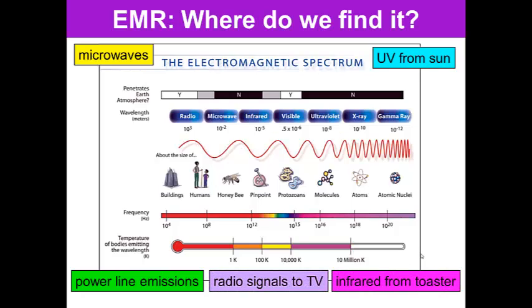Here are some things that we use electromagnetic radiations for. Microwaves use it to heat food. Ultraviolet rays from the sun, this is how we get sun tans and sunburns. Infrared are heat released from things like toasters or ovens. Radio signals to TV are all electromagnetic radiation, as are power line emissions.